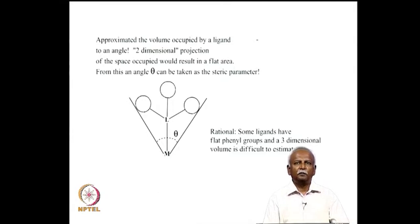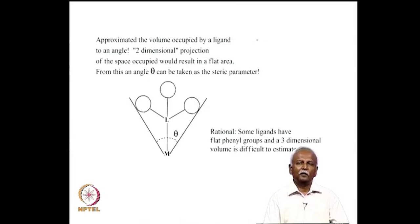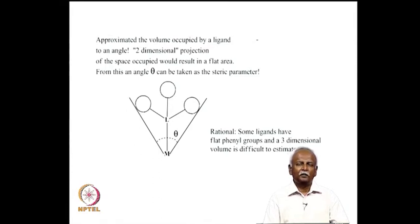It is difficult to estimate in a fully 3D fashion the volume occupied by the ligand, because some ligands are flat — for example, a triaryl phosphine has three phenyl groups which are reasonably flat. The way you orient it could change the volume it occupies. An approximation is to project it onto the surface using the best orientation the ligand would prefer.